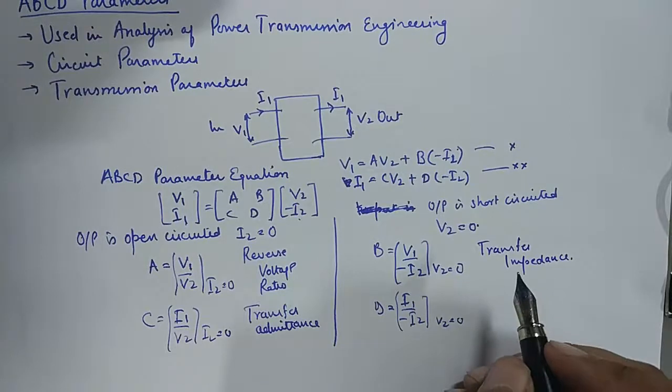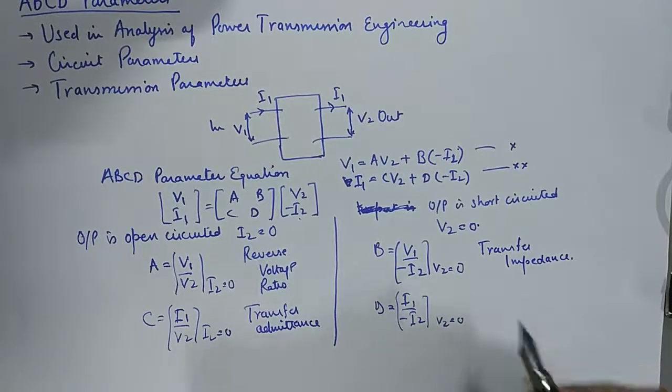And finally, D is the ratio of two currents and is known as reverse current ratio.